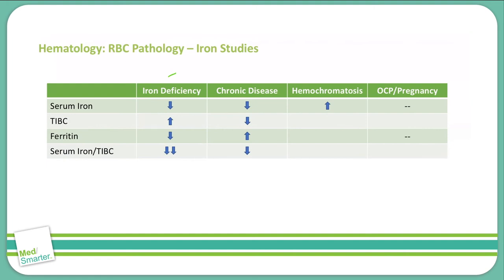In hemochromatosis, you're getting an increase in the serum iron. Your total iron binding capacity will be going down because this increase in serum iron is going to decrease the transferrin in the body. Ferritin, the storage medium for iron, will increase because it has to store more — there's more in the body that's got to be stored. And your serum iron to total iron binding capacity ratio will be greatly increased.